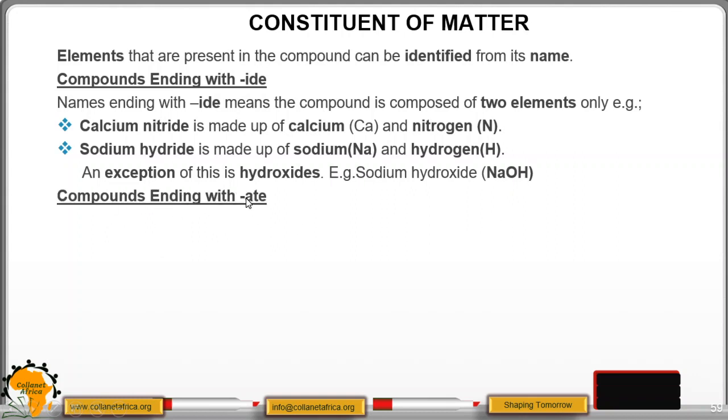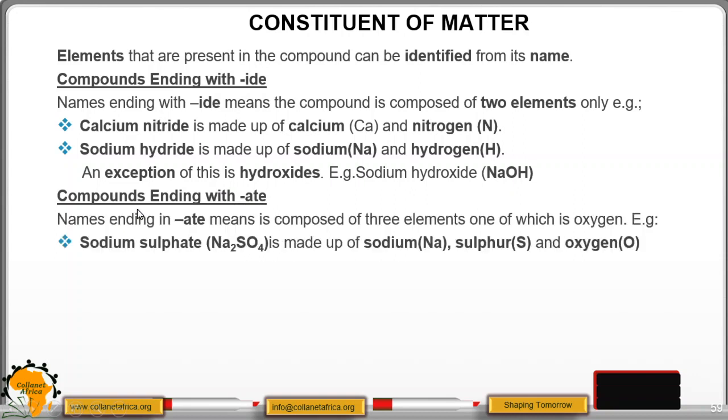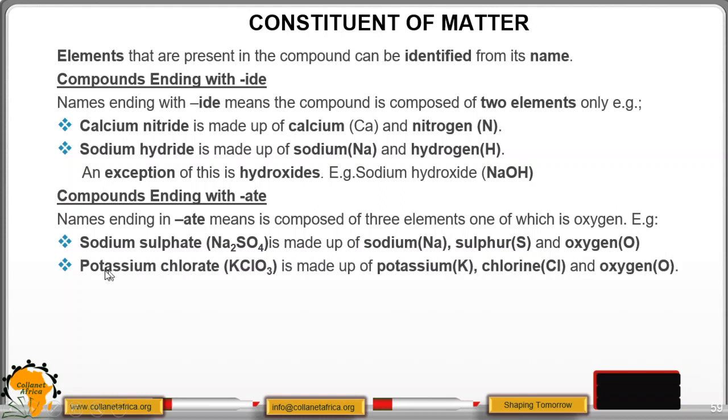Compounds ending with -ate. Names ending with this one is composed of three elements, one of which is oxygen. For example, sodium sulfate. So sodium sulfate, we have sodium, then we have sulfur, and we have oxygen. So sodium Na, sulfur S, oxygen O. Another one is potassium chlorate. It is made up potassium K, chlorine Cl, and oxygen O.